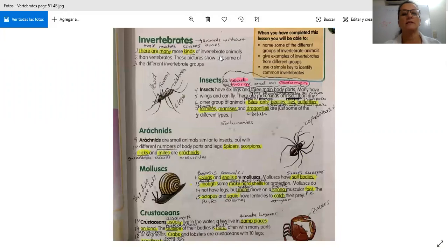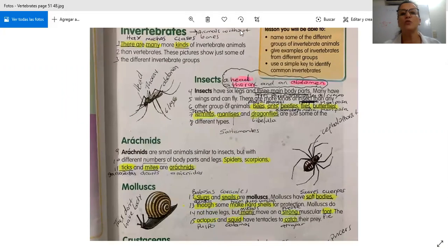Invertebrates. Animals without bones. Animals without bones. There are many more kinds of invertebrate animals than vertebrates. These pictures show you some of the different invertebrate groups.